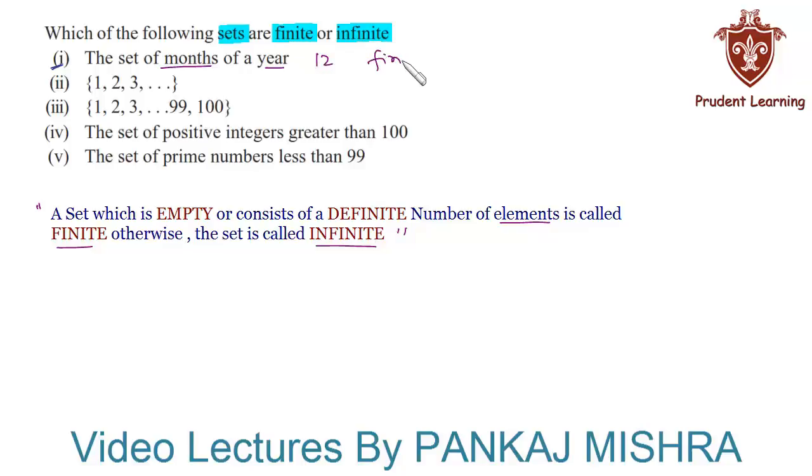The second set given to us is written in roster form where we have elements 1, 2, 3, and so on. Actually, it is nothing but the set of natural numbers, and we know that the set of natural numbers has infinite number of elements, so it is an infinite set.